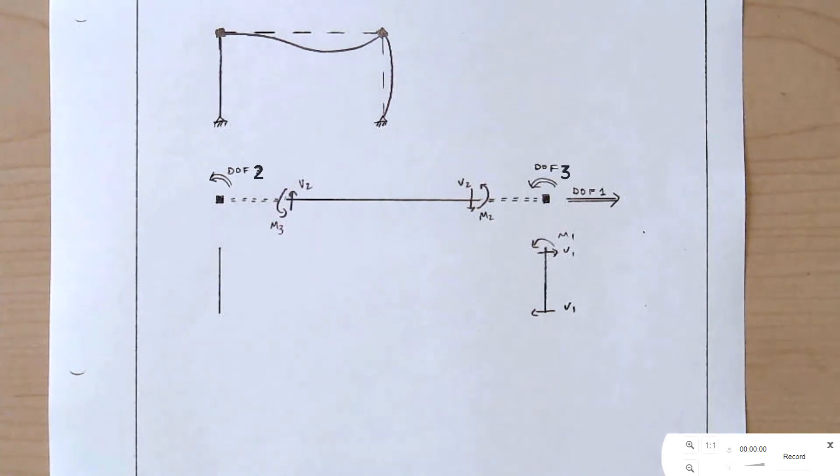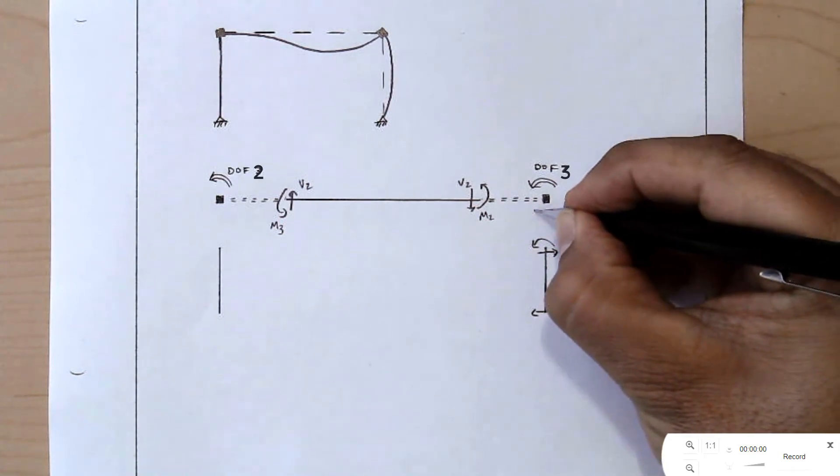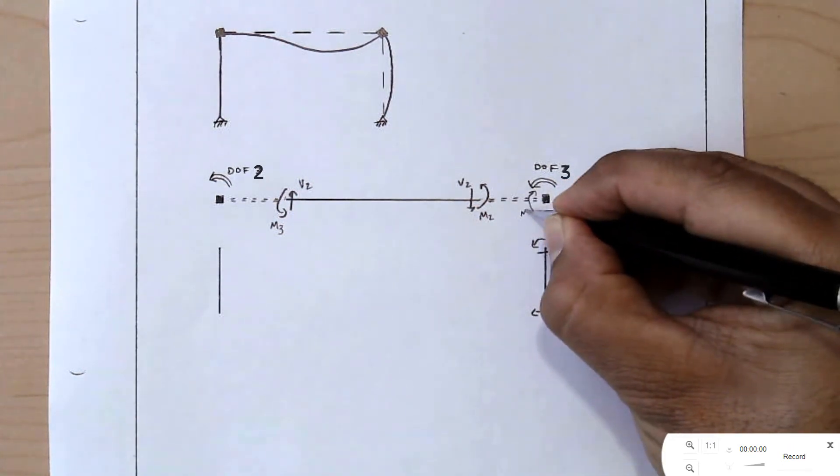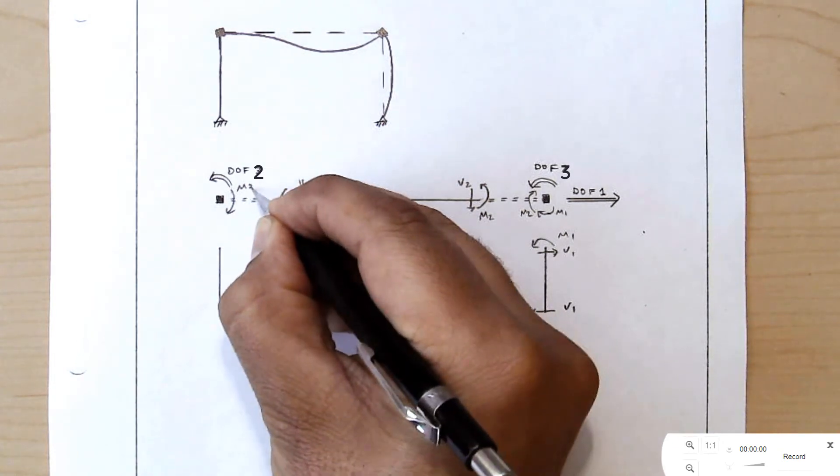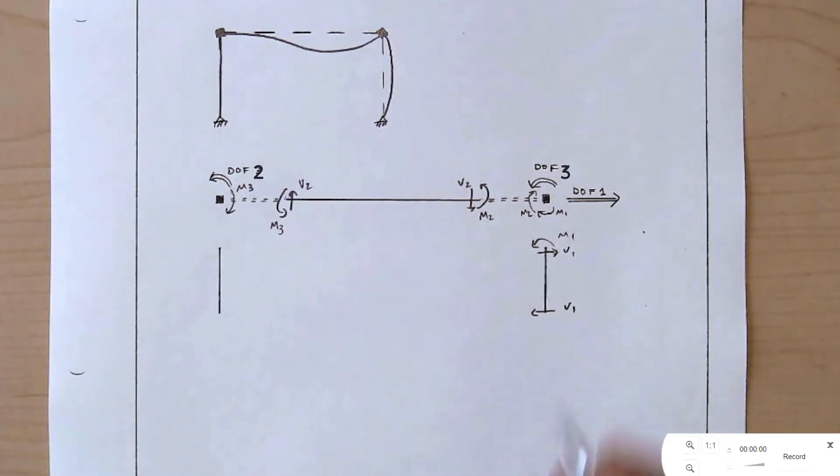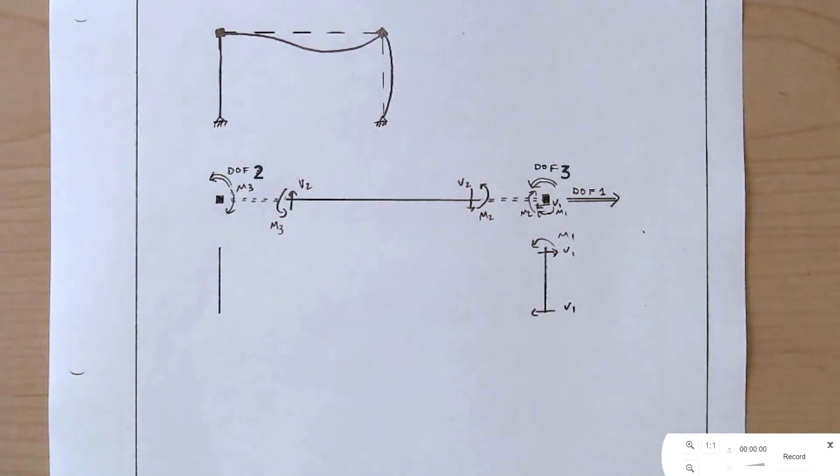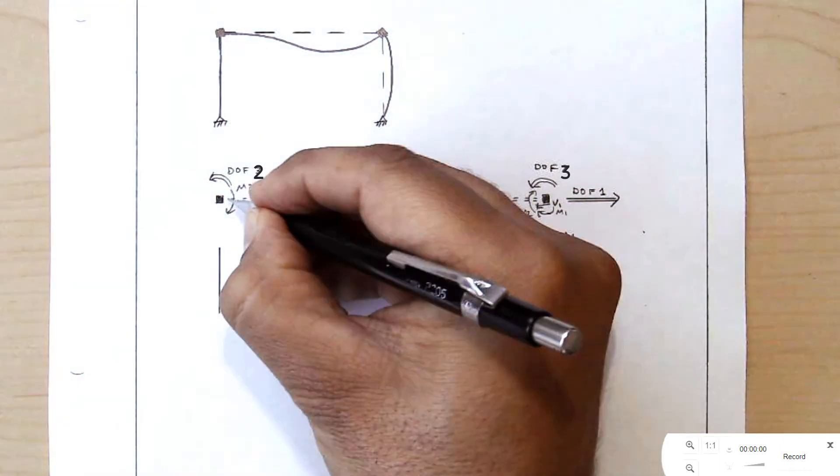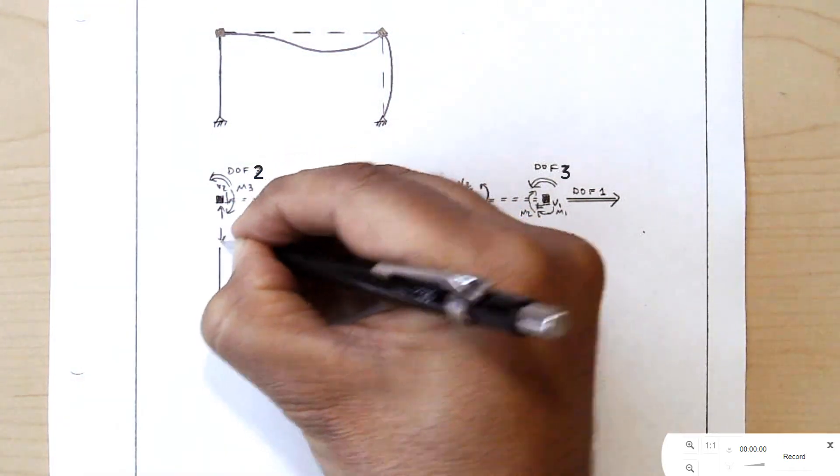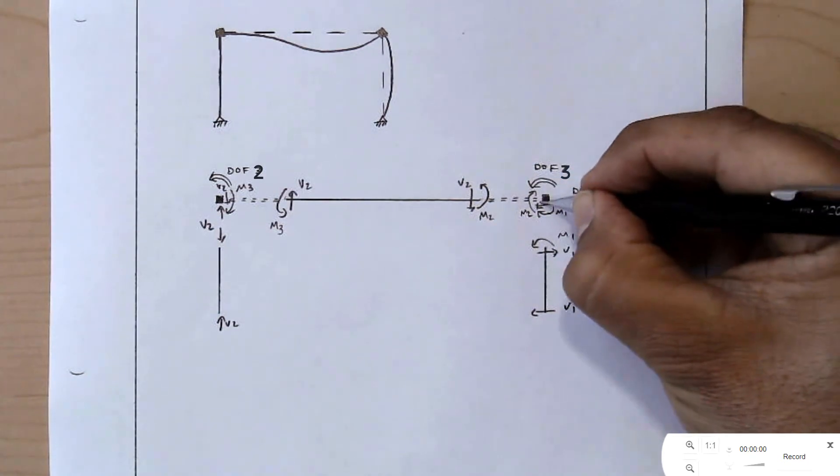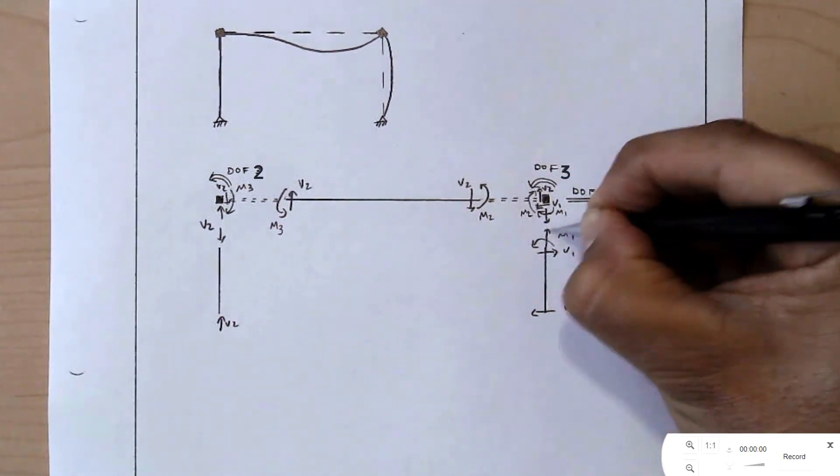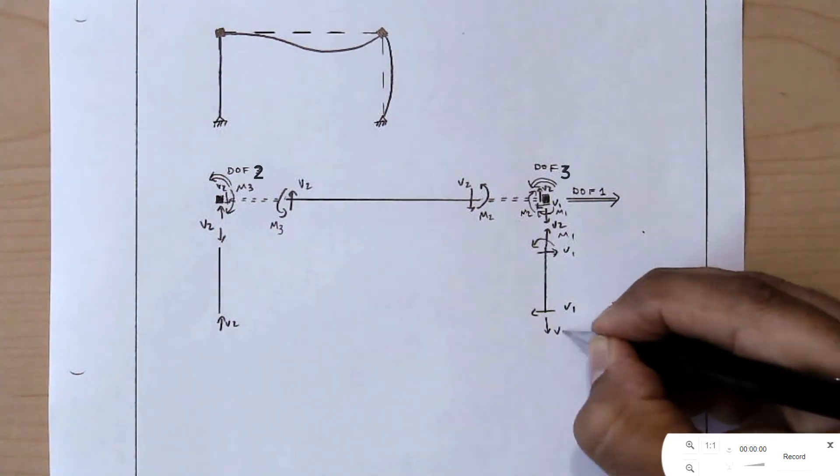Just the same as in the previous degree of freedom, only that now they're on different locations on the structure. Again, we'll look at the equal and opposite reactions first for the moment. M2 from the beam. M1 from the column. M3 from the beam. We'll look at the shear. V1 right here from the column. And here we have V2. V2 that comes all the way down to the foundation. And here we have V2 that comes all the way down to the foundation.